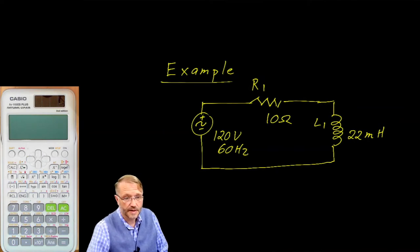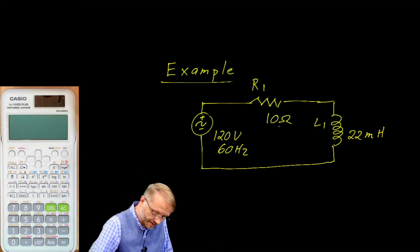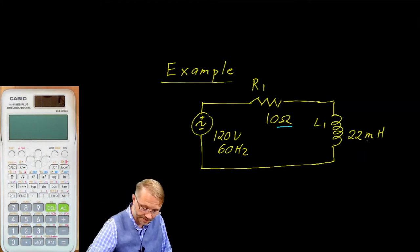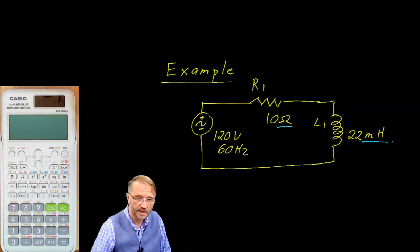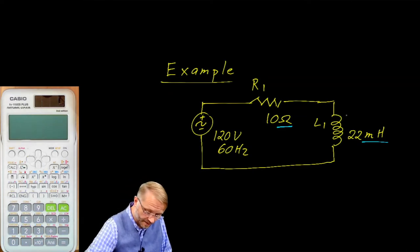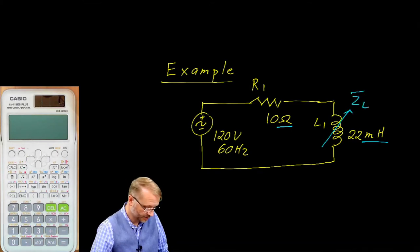This is a series circuit. It has a 120 volt source, a 10 ohm resistor, and a 22 millihenry inductor. As we start, you're going to have to be careful. Notice that the units on the resistor are ohms, and the units on the inductor are millihenrys. Those are not compatible. What you have to do is calculate the impedance of the inductor. That's your opening move.